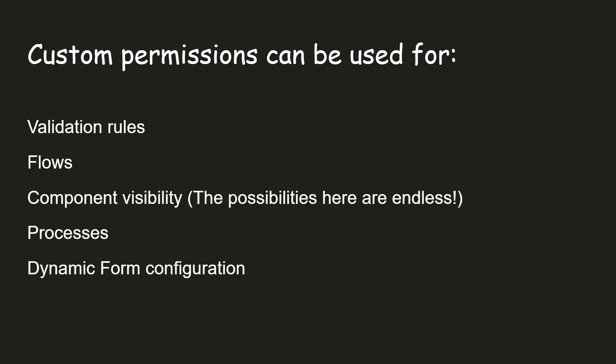We can assign custom permissions using permission sets and profiles. All users who have that particular permission set will have that custom permission. As we know, we cannot use a permission set name directly in validation rules, but we can use the custom permission name. So indirectly, the custom permission is associated with that permission set, and users with that permission set will get access or bypass via the validation rule.